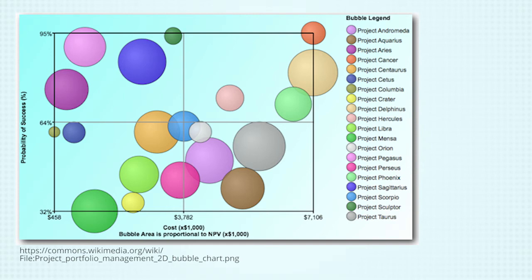In this chart, each project is plotted based on the cost versus the probability of success. The size of the bubble represents the net present value. So a larger bubble in the top left corner would mean that it has a high net present value, a high probability of success, and a low cost. This would be a good project to select.